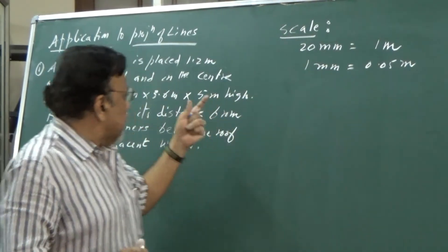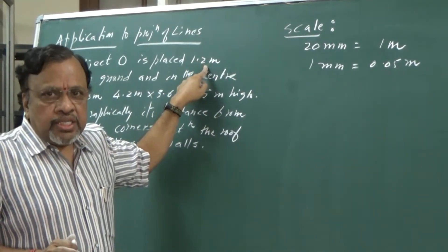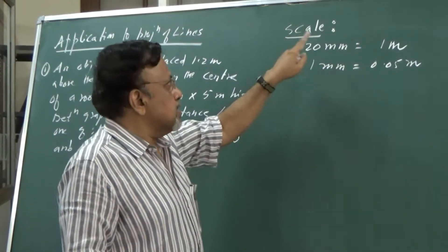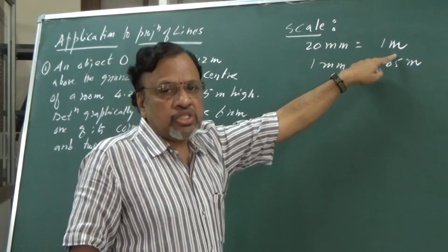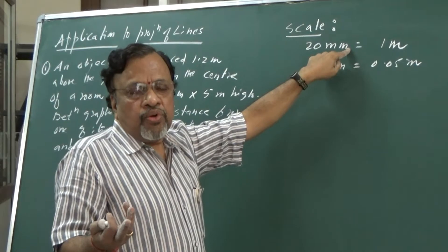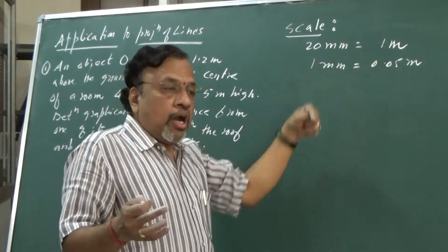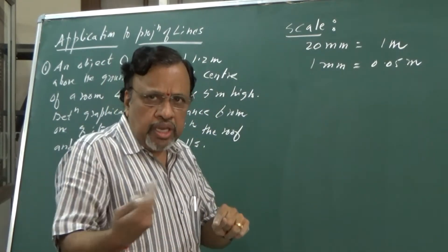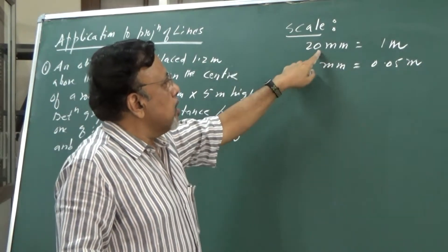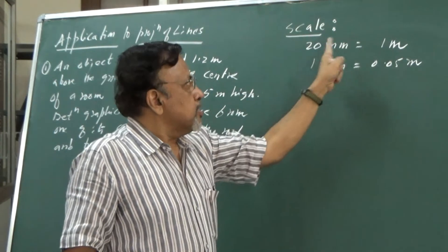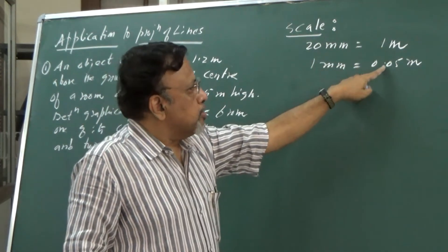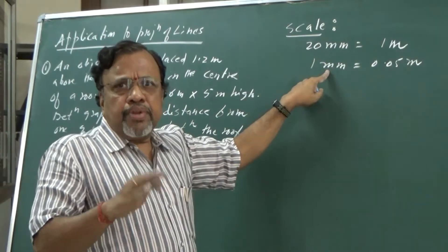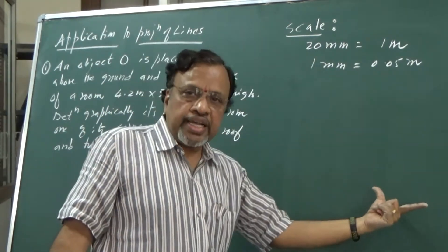Since the dimensions are given in meters and I cannot accommodate meters directly in a drawing, I need to take some scale. Let us take the scale as 20mm equals 1 meter, which means 1mm equals 0.05 meters. Once I get the final solution, I will measure the distance in mm and multiply it by the scale factor 0.05 to get the actual dimensions.